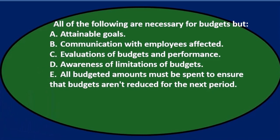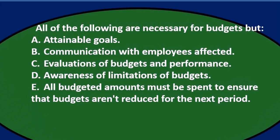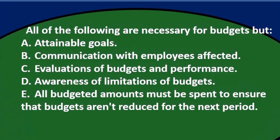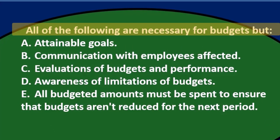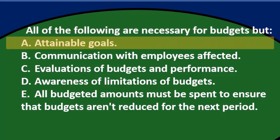Let's go through this using the process of elimination. All the following are necessary for budgets, but — so we're looking for the exception, the one that doesn't apply. A. Attainable goals — all the following are necessary for budgeting; I would think attainable goals is something we want, so I would think that would be there.